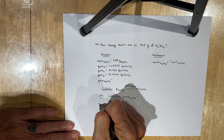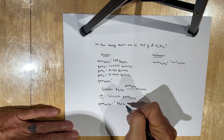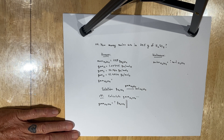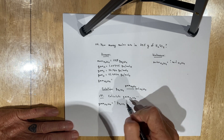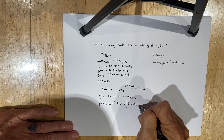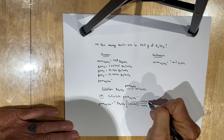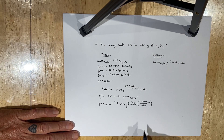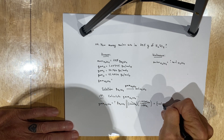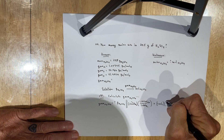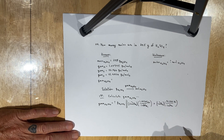You're looking for the gram molecular mass in grams of H₂SO₄. In H₂SO₄ there are two moles of hydrogen atoms, and each mole of hydrogen atoms has a mass of 1.00795 grams of hydrogen — moles of hydrogen cancel, leaving grams of hydrogen. There is one mole of sulfur in H₂SO₄, and one mole of sulfur has a mass of 32.066 grams of sulfur — moles of sulfur cancel, leaving grams of sulfur.